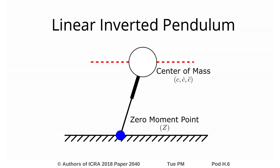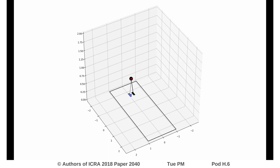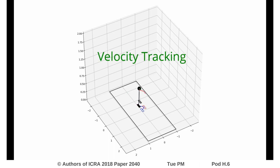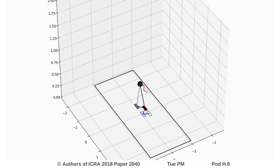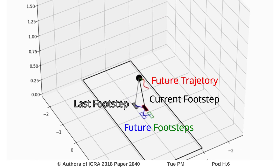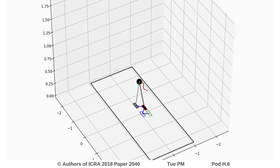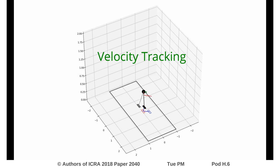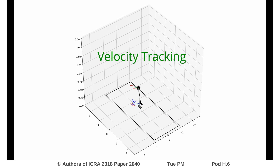Model predictive control of the linear inverted pendulum has effectively been used in bipedal locomotion to generate reactive walking controllers. By using the linear inverted pendulum to represent the underlying dynamics, the MPC formulation remains both compact and linear, and thus can be solved efficiently in an online manner. Researchers have formulated linear MPC walking controllers that output center of mass trajectories and footstep locations to track reference velocities and recover from external perturbations.